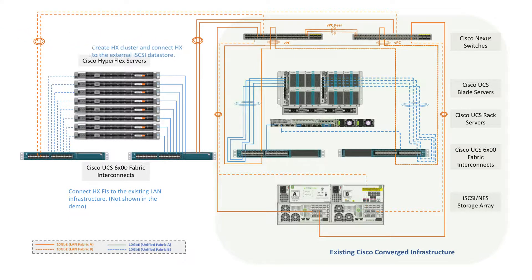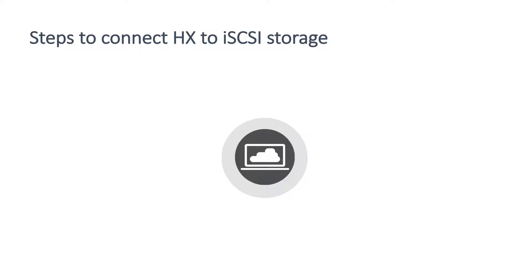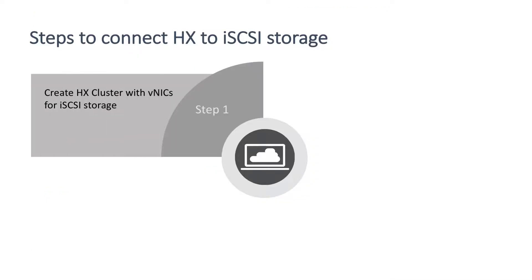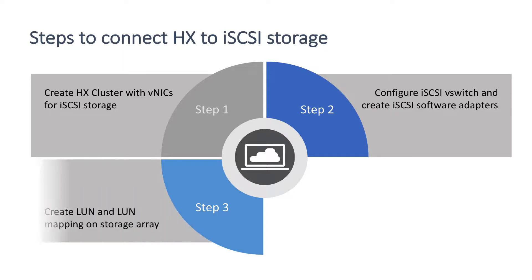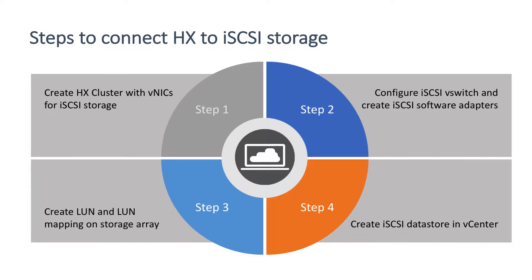There are four steps in this demo. Step 1: create HX cluster with vNICs for iSCSI storage. Step 2: configure iSCSI vSwitch and create iSCSI software adapters. Step 3: create LUN and LUN mapping on storage array. Step 4: create iSCSI data store in vCenter.